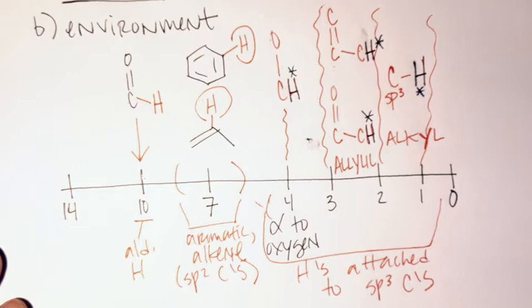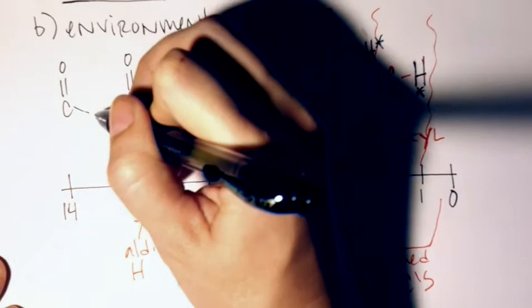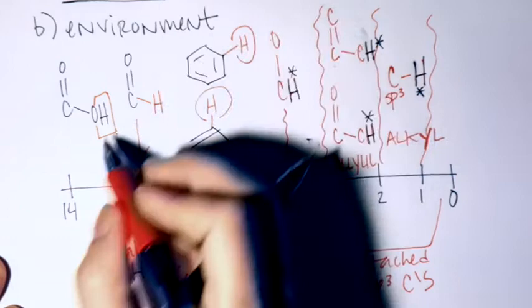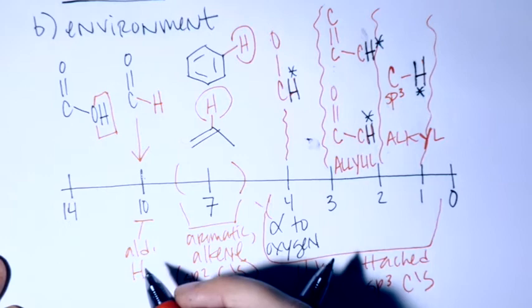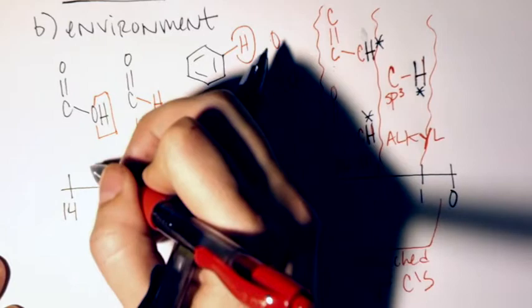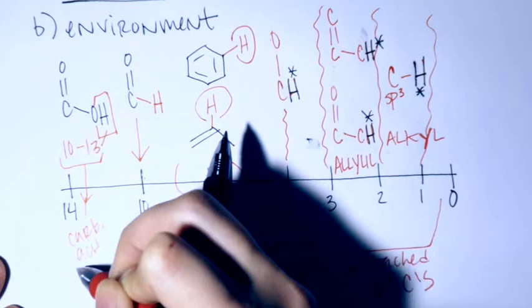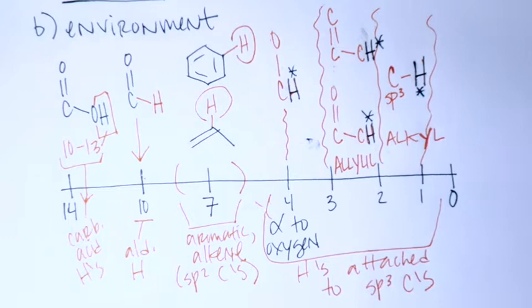Up until here all the H's we've investigated have been on carbon, but keep in mind we can also have H's on heteroatoms — attached to oxygen or nitrogen. One special case is the H in a carboxylic acid, which is attached to an oxygen. That hydrogen tends to be very far downfield, showing up anywhere between about ten and thirteen or fourteen. It's a very distinctive, key region because nothing else really shows up there.